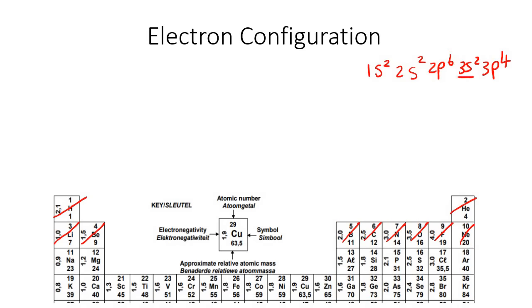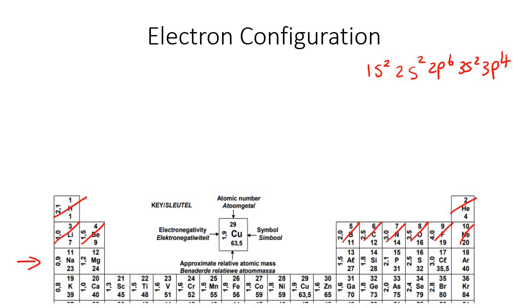Now we're going to go to row 3. Row 3 is this one, and they said that we must go to the S block. We're going to cross off two electrons there. Then we are in row 3 but now we're in the P block, and they said we must cross off four. And the last thing that you cross off — that is what you have. So that is sulfur.